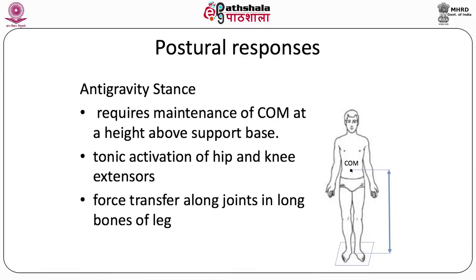The upright stance is one of the most common functional postures. Standing on two legs involves joints like the hip, knee, and ankle. Fortunately, in humans the long axis of the bones is aligned to the gravitational vector, so upright stance can be maintained with minimal postural contribution from the limb muscles.